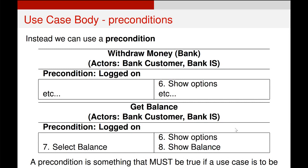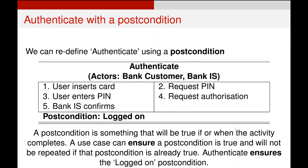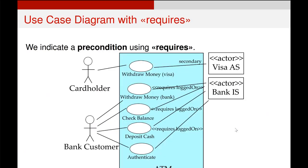So there is a second way of getting this relationship together, called using a precondition. In this scenario the precondition might be something like the user has authenticated, and if they have, that will allow them to go through the withdraw money use case or the check balance use case. In this case our authenticate use case would enforce that, so at the end of our authenticate use case we would have a post condition which is 'logged on'. The authenticate use case, in this example, ensures that the post condition is true — and if it is true, this does not need to be repeated. This is what allows us to authenticate only once.